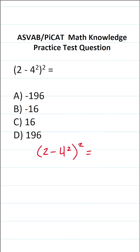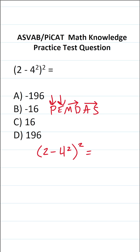In order to solve this one, we have to follow the order of operations. The way I remember the order of operations is using the acronym PEMDAS. We're going to work out what's in parentheses first, exponents next, then multiplication and division as they appear in the expression from left to right — they're treated as equals. And finally, addition and subtraction as they appear from left to right — also treated as equals.